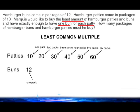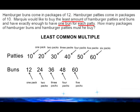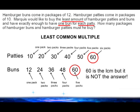So when we count by 10s for the hamburger patties and count by 12s for the hamburger buns, we can see that the least common multiple is 60. However, we must be careful because 60 is not the answer.